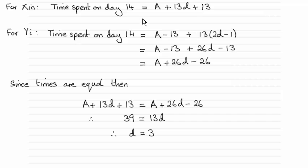So from the previous part, we found out the time spent in minutes on day 14 for Xin was A plus 13D plus 13. That we found in part A. Now for this part, we're told that...